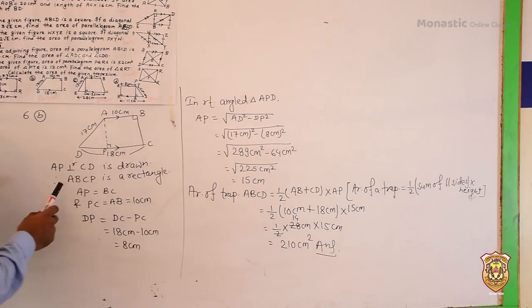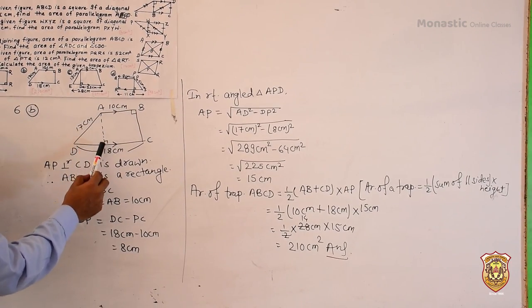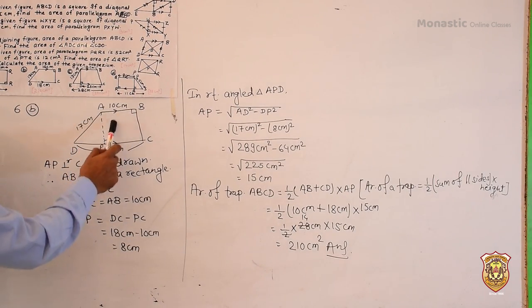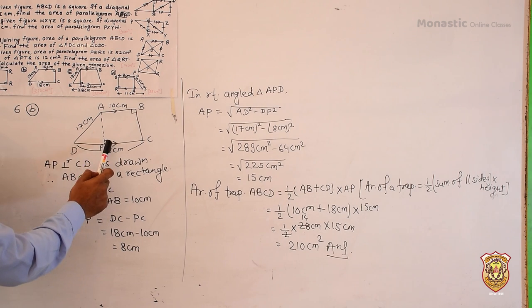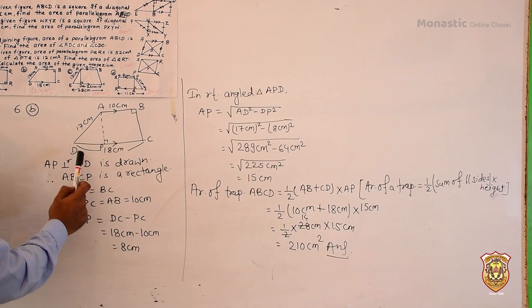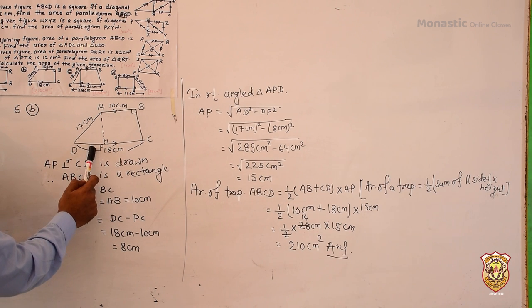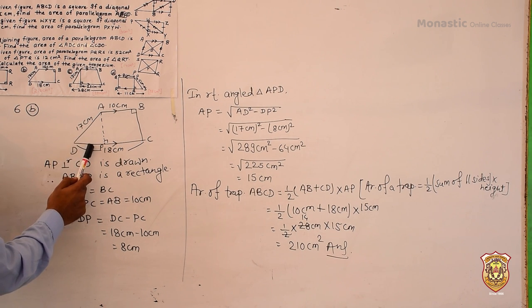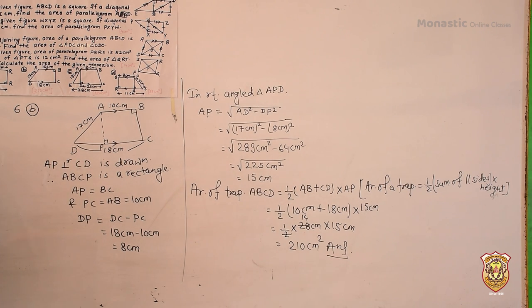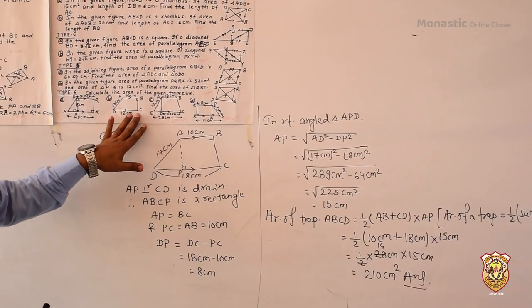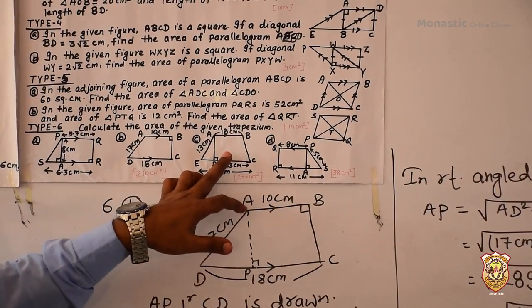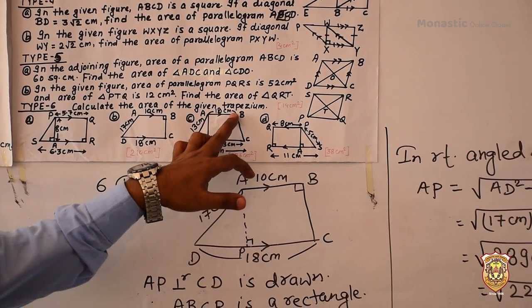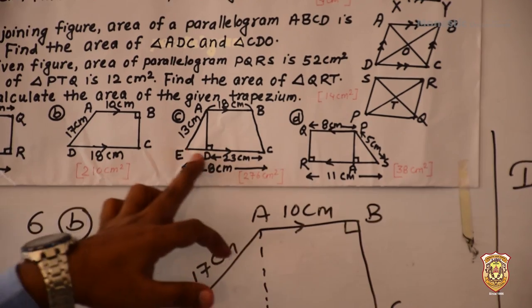Now using the formula: area of trapezium ABCD = ½ × (AB + CD) × height = ½ × (10 + 18) × 15 = ½ × 28 × 15 = 210 cm². What we did: we drew a perpendicular from A to form a rectangle, used opposite sides of the rectangle to find DP, then found the height using the right triangle, and finally applied the trapezium area formula. For question 6c in the figure, you have to draw the perpendicular from B to solve similarly.